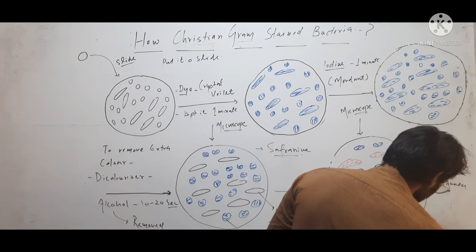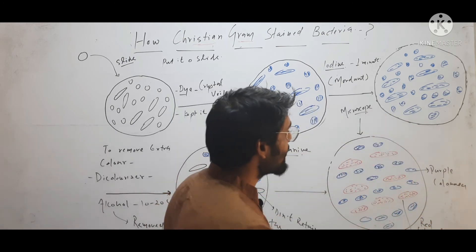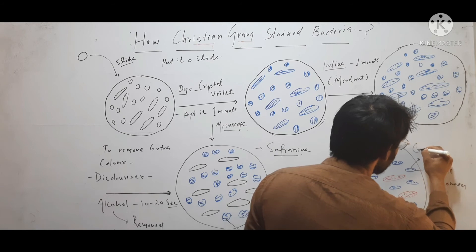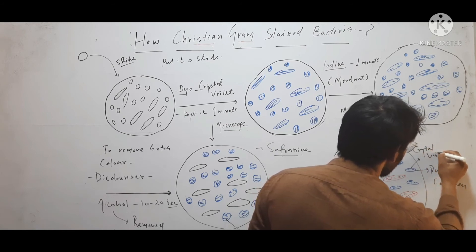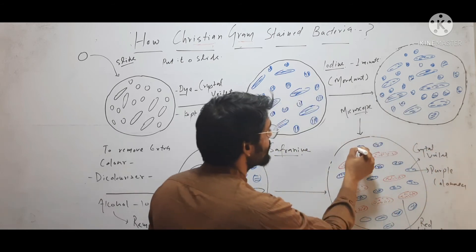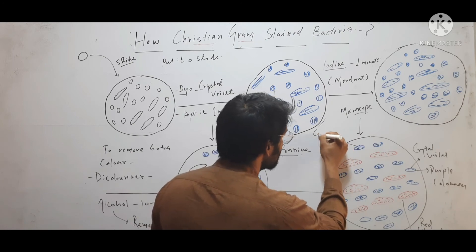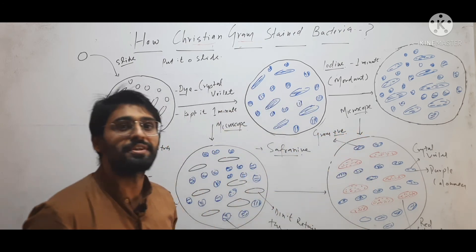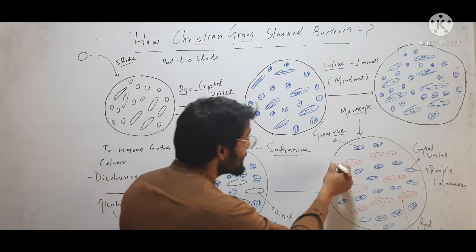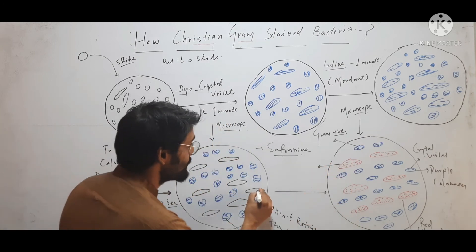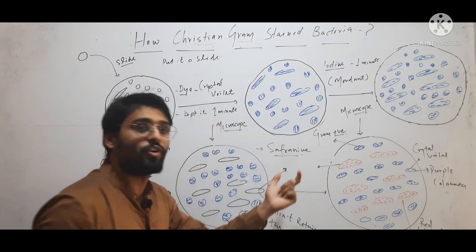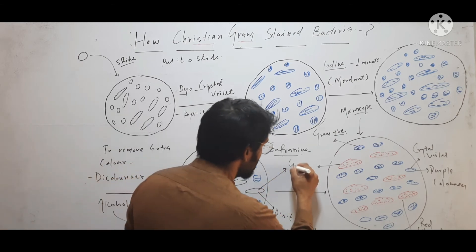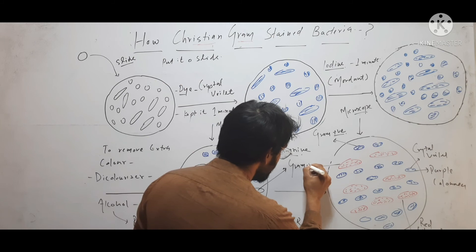These purple colored cells retained the dye, that is crystal violet. These cells were called gram positive bacteria or gram positive cells. The other cells that did not retain crystal violet dye were called gram negative.